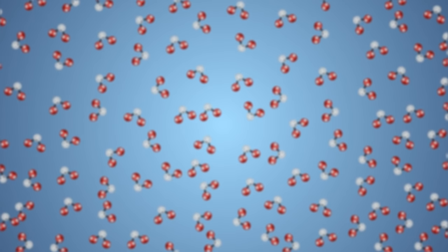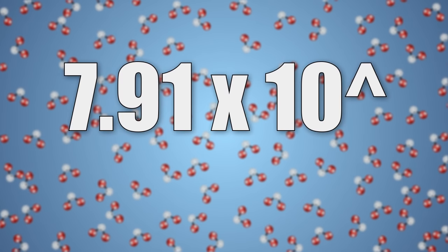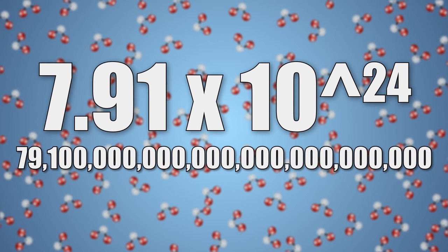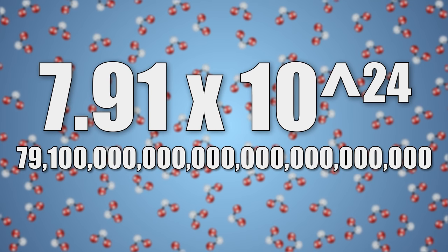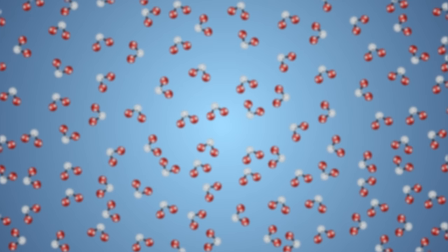One 8 oz cup of water contains in the neighborhood of 7.91 times 10 to the power of 24 molecules of water. That comes out to be around this many molecules of H2O in every cup. This puts into perspective how very small molecules are.